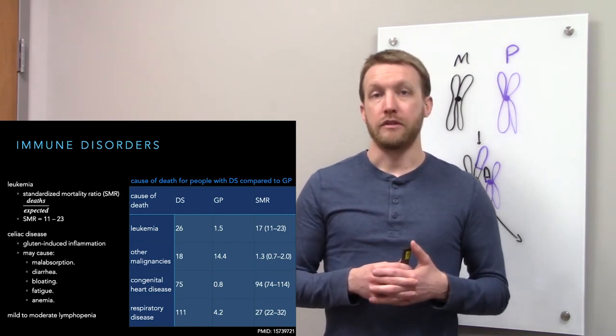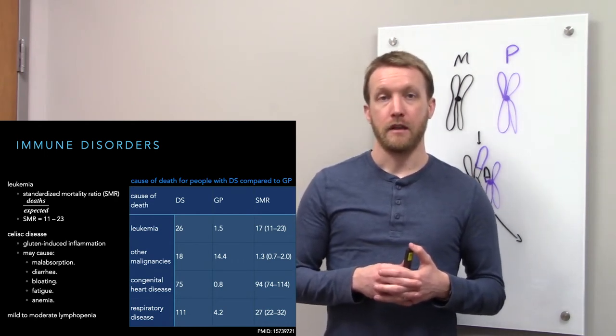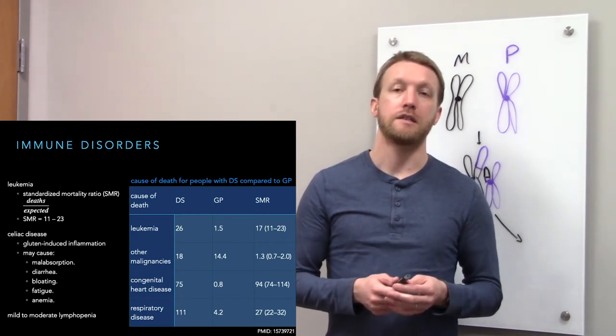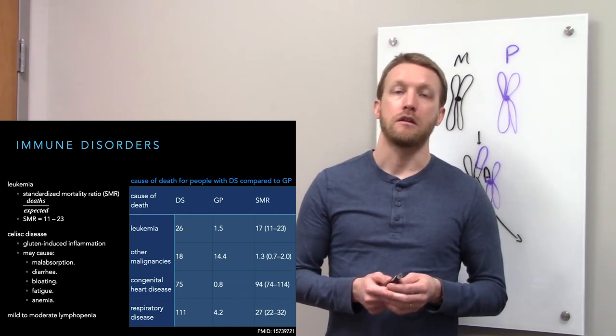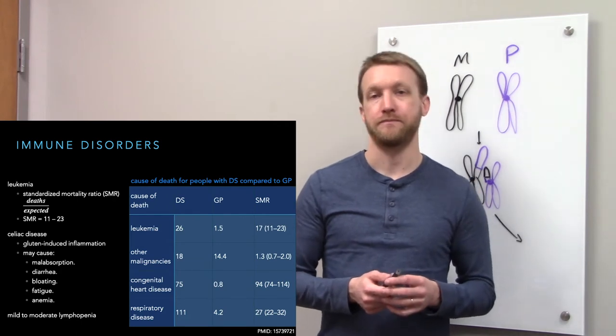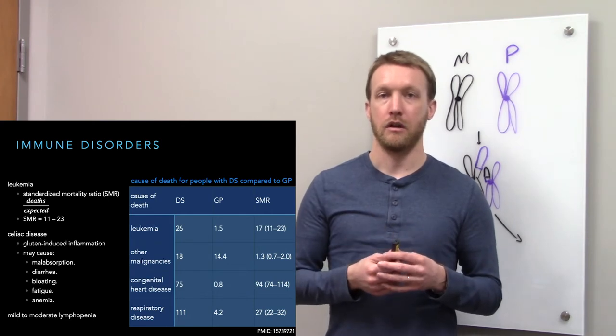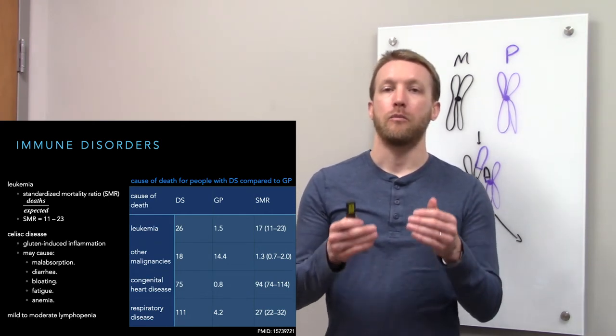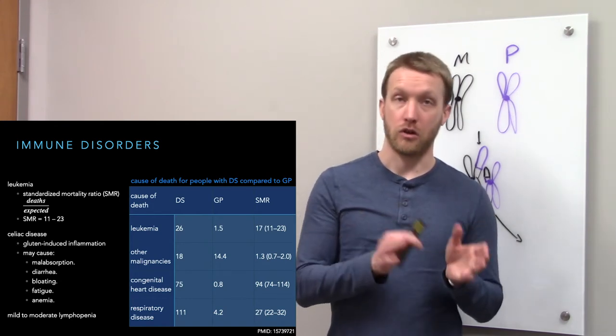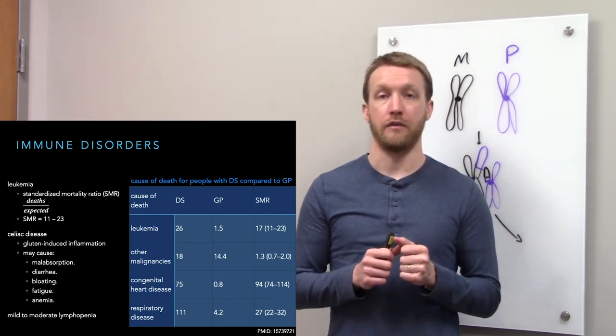Increased risk of infection creates the respiratory disease. Congenital heart disease is a major cause of death. We have a standardized mortality ratio of 94. But if you look at the actual number of deaths, it's actually more so caused by respiratory disease.